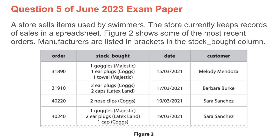So let's quickly start on the exercise. This is from question number 5 of the June 2023 exam paper. A store sells items used by swimmers. The store currently keeps records of sales in a spreadsheet. Figure 2 shows some of the most recent orders. Manufacturers are listed in brackets in the stock board column. There are four columns.